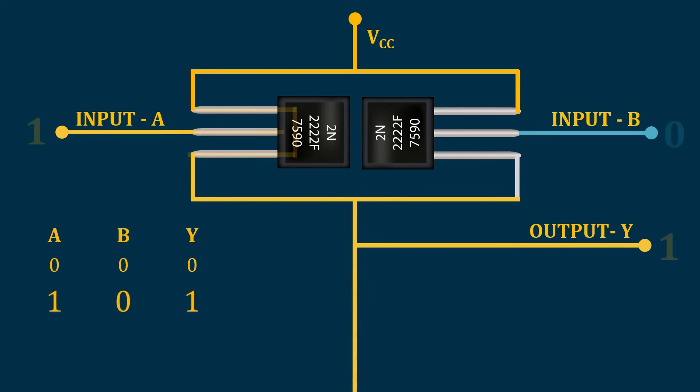Now when we reverse the inputs, the output will become 1 because of this transistor. And when both inputs are 1, we still get 1 in the output.